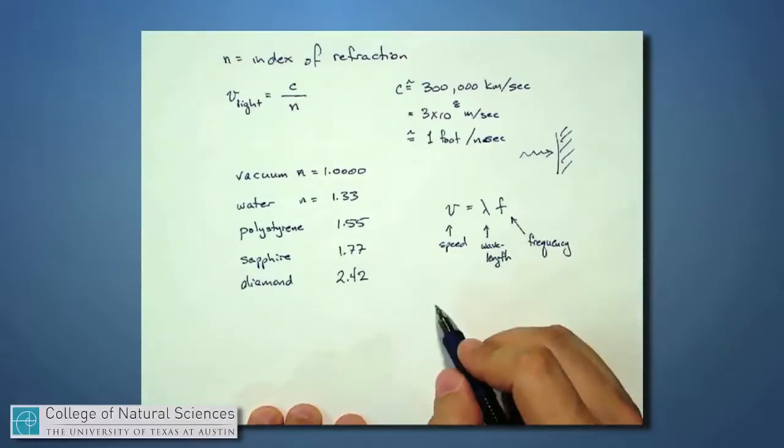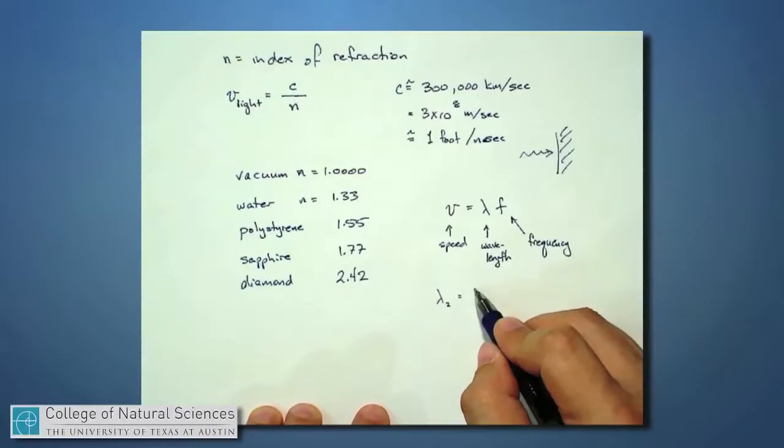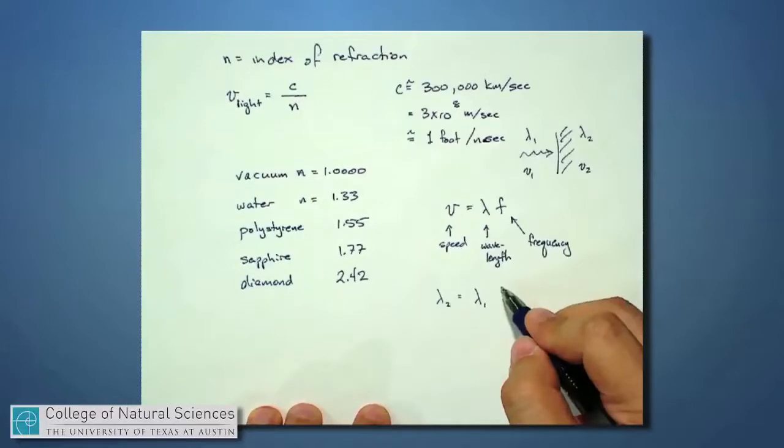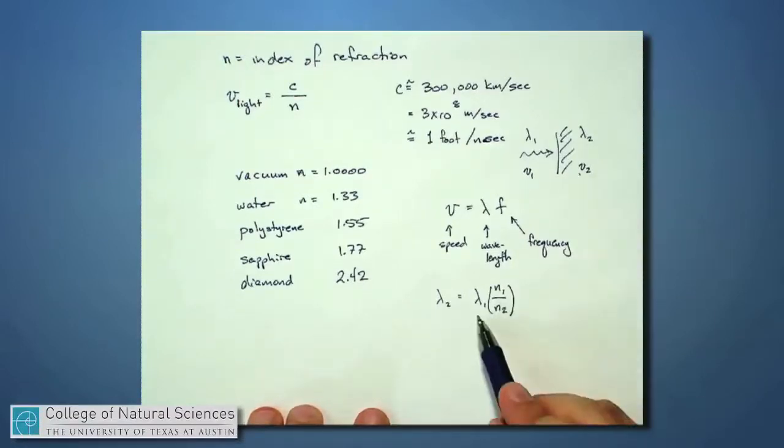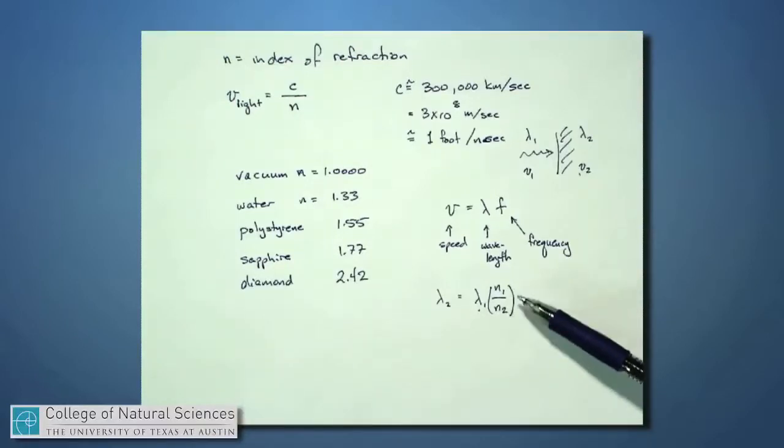So what we will have is that if I have a certain wavelength lambda 1 over here and a different wavelength lambda 2 over here, and this is V1 over here and this is V2 over here, what we find is that this wavelength on the right hand side of the boundary is equal to the old wavelength but reduced by this factor 1 over N2. So if I'm going from air into glass, then the wavelength gets a little smaller,